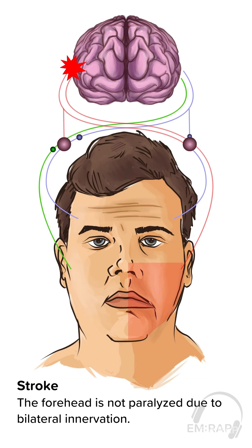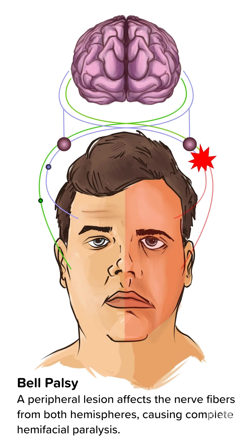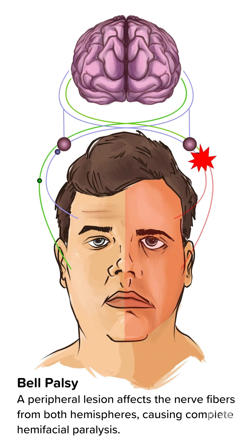That is why a stroke will cause paralysis of the lower face but not the forehead. In bell palsy, or idiopathic facial nerve paralysis, the lesion is peripheral — after the nerve fibers from both sides of the brain have already combined pathways. This is why bell palsy causes paralysis of the entire side of the face, including the forehead.